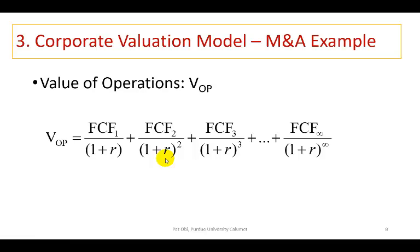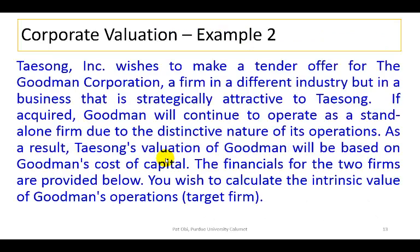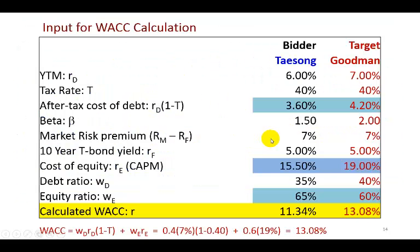Moving into the example for this presentation: the case of Taesung Incorporated. Taesung is the firm making the tender offer and Goodman is the target firm.